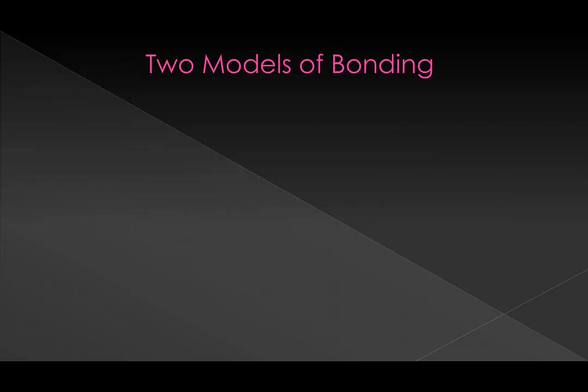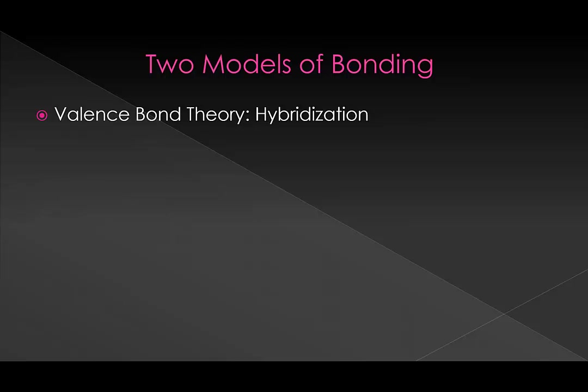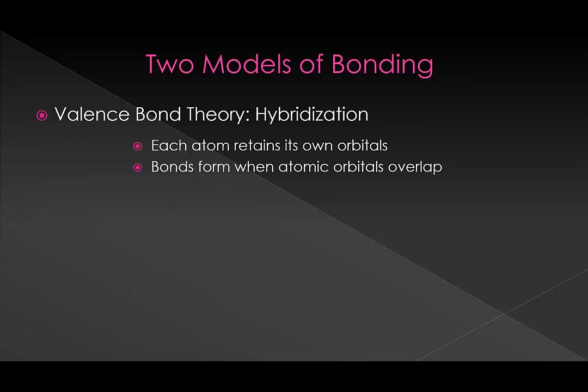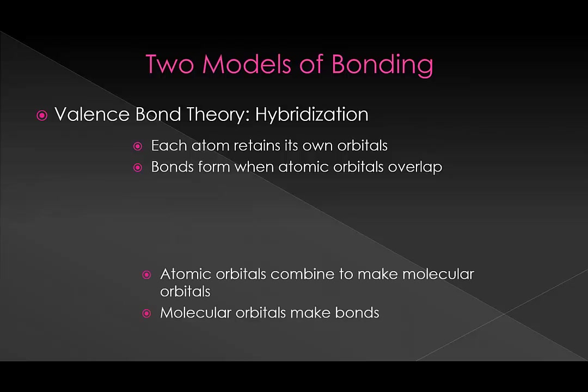We have two models of bonding. First, we have valence bond theory, which includes hybridization. In this case, atoms are going to retain their own orbitals, but overlapping orbitals form our bonds. The other option is molecular orbital theory. In this case, our atomic orbitals are combining, and those make new molecular orbitals, which then form our bonds.